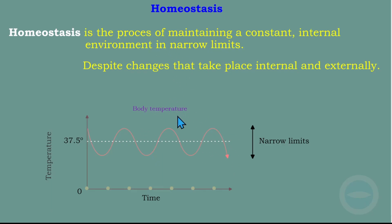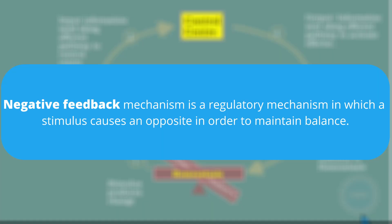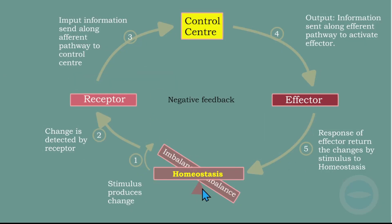There is a mechanism that is responsible for making homeostasis possible, and that mechanism is called the negative feedback mechanism. A negative feedback mechanism is a regulatory mechanism in which a stimulus causes an opposite response in order to maintain balance.